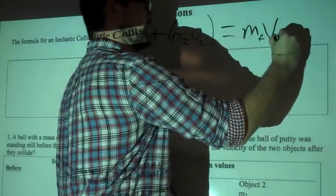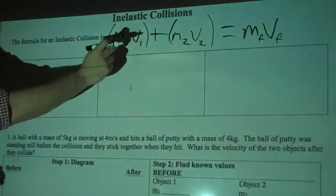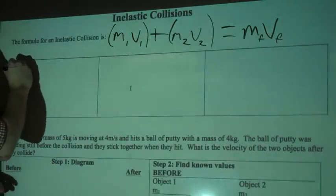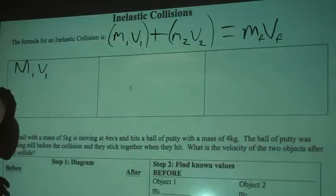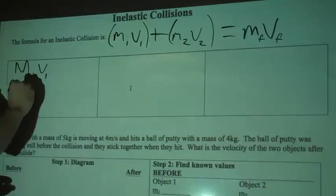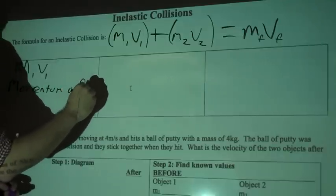And we're going to write final, or f, underneath each of these. So here's what these mean: mass 1, velocity 1, or m1v1. This is the momentum of the first object.